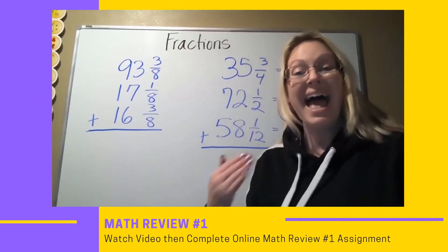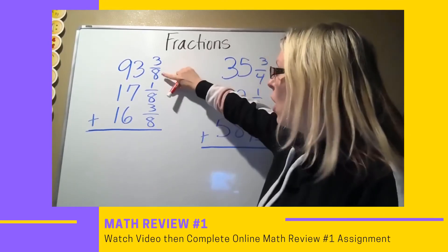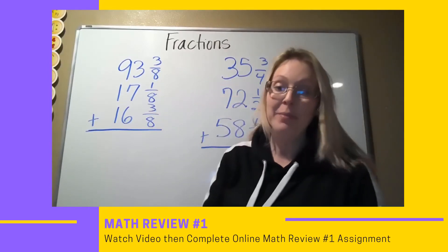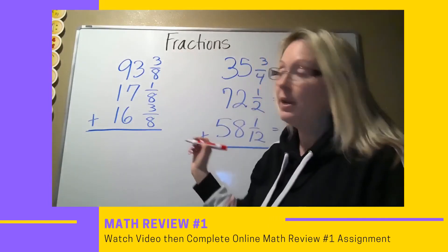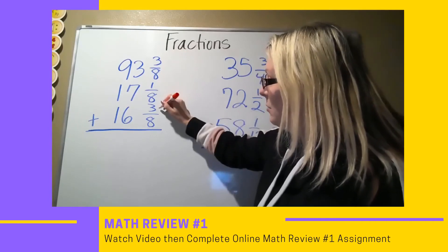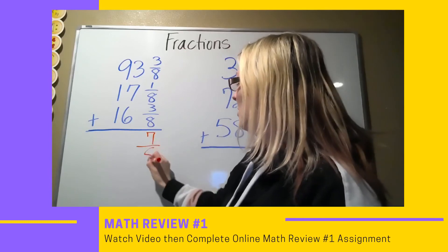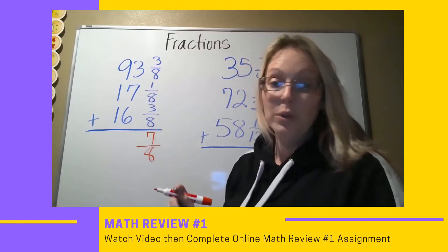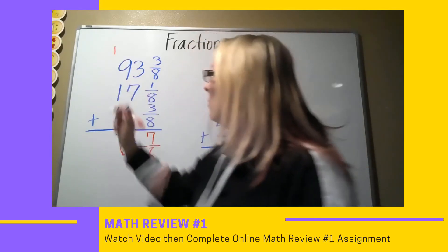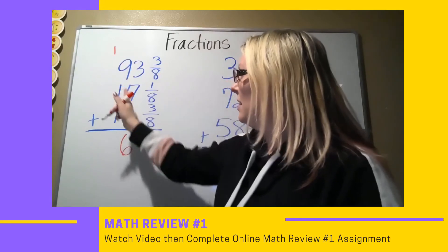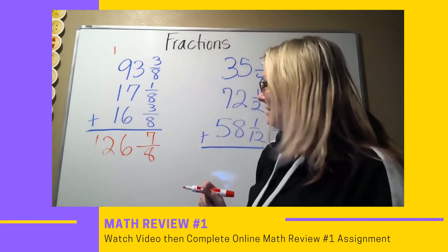Now, we're going to do adding fractions. So, as you can see here, I have problems that have all of the same common denominator. So, adding this way is really easy. All I do is add my top numerator numbers. So, 3 plus 1 plus 3 is 7 with my common denominator of 8, and then I add my whole numbers. 3 plus 7 is 10 plus 1 is 6. Carry my 1, 9, 10, 11, 12. My answer is 126 and 7 eighths.